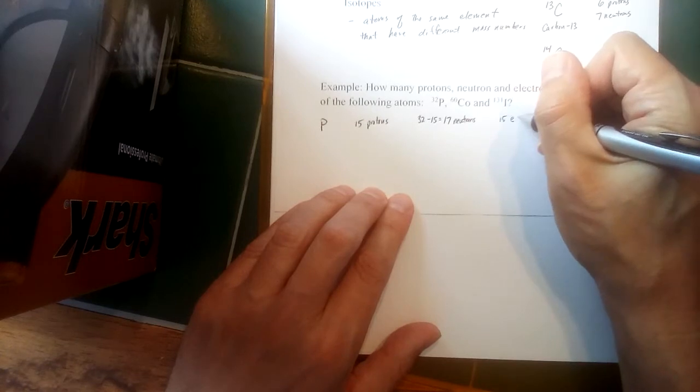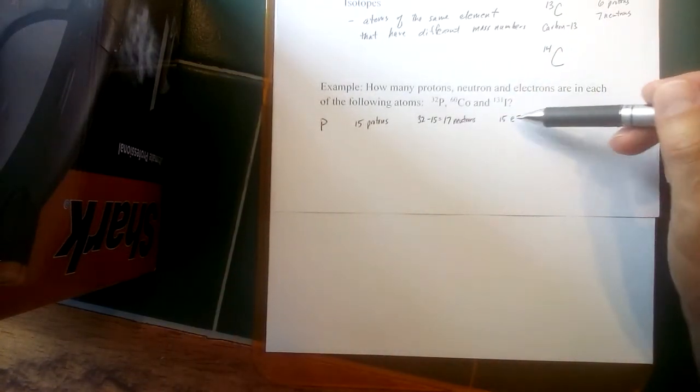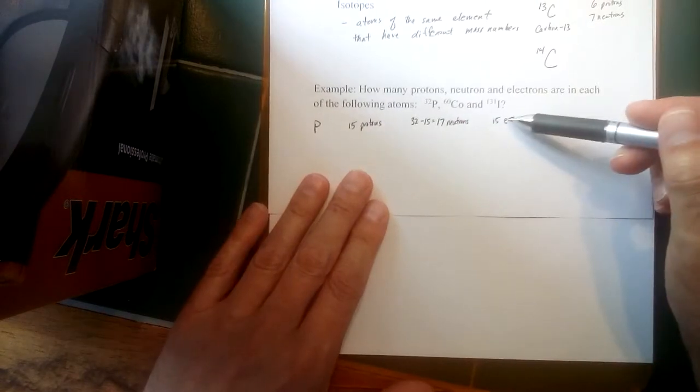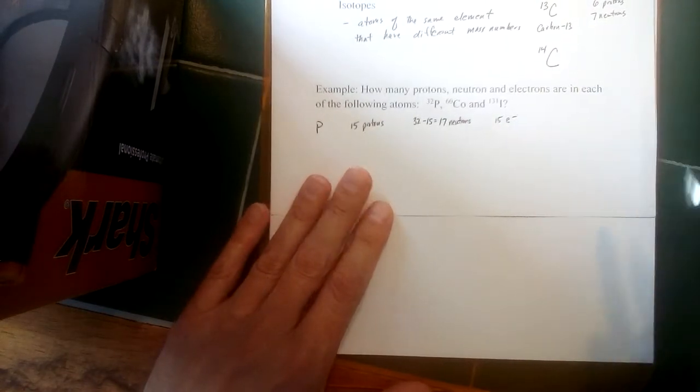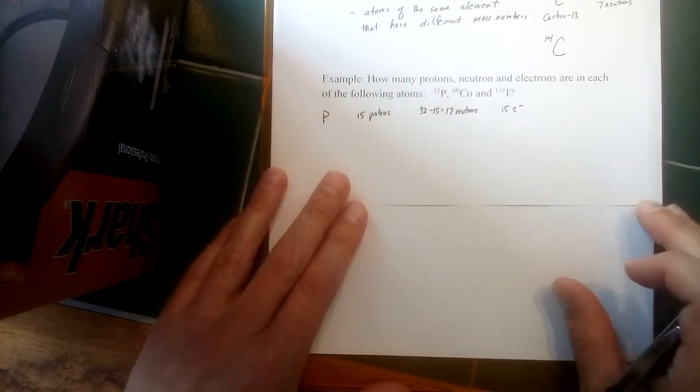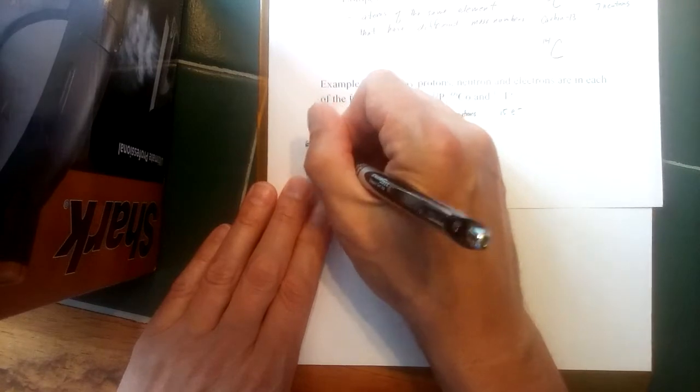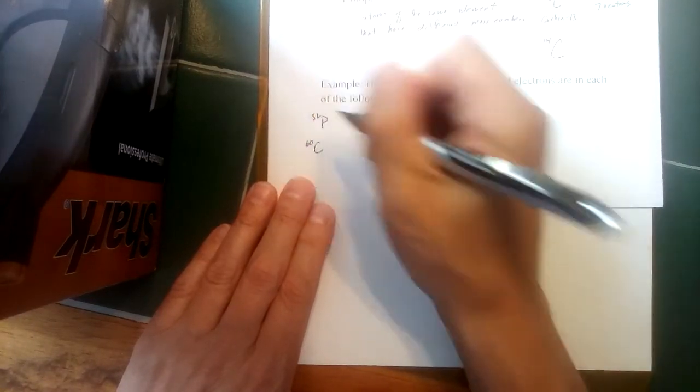So if we're looking at a neutral atom, once we've figured out how many protons are in there, that is also how many electrons are in there. So there are 15 electrons in this atom of phosphorus as well. Now we can do the same thing here for the other elements. Cobalt-60—let me put the 32 up there just for the phosphorus.